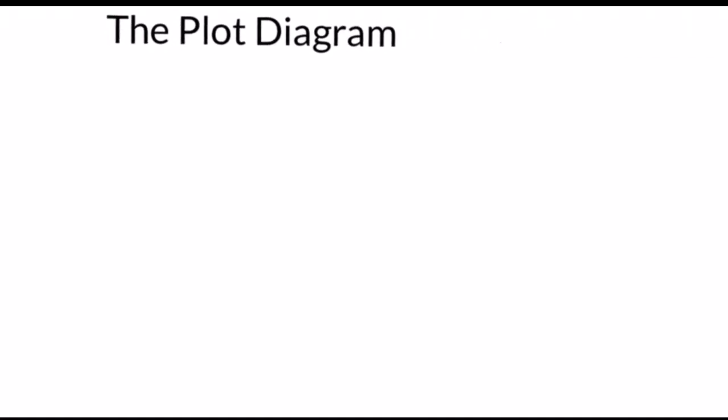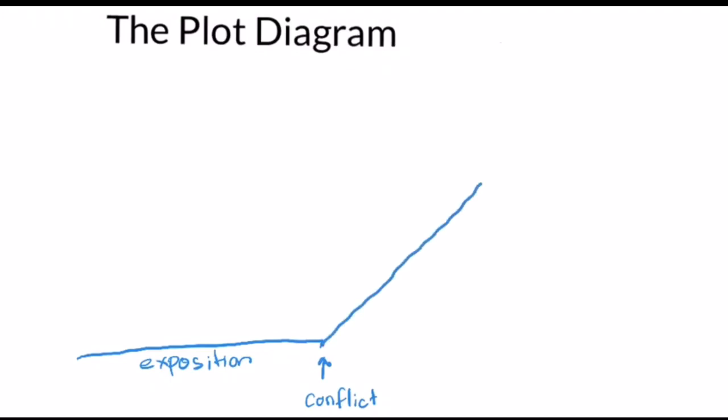To make your understanding better, let me explain about the plots using the plot diagram. The plot begins with the exposition, which is represented by a horizontal line — because during this plot there is no conflict yet, and this is where the characters and setting are introduced. When the conflict arises, the rising action plot begins, represented by a line moving upward towards the highest peak.